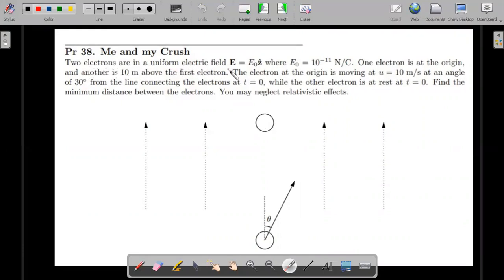Let me go through the formal wording. Two electrons are in uniform electric field E = E₀, value is given. One electron is at the origin and the other 10 meters above. These two circles represent the particles called electrons.